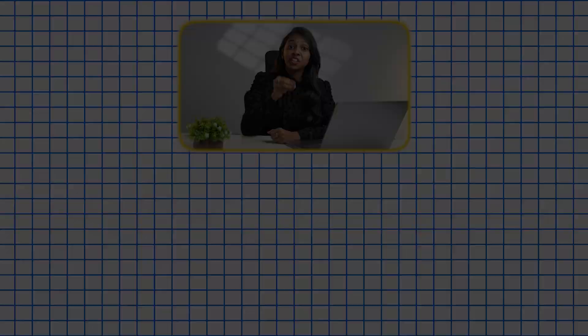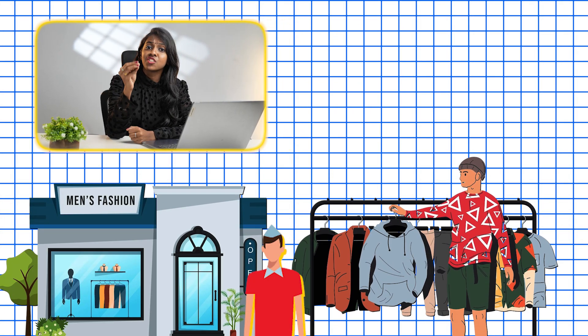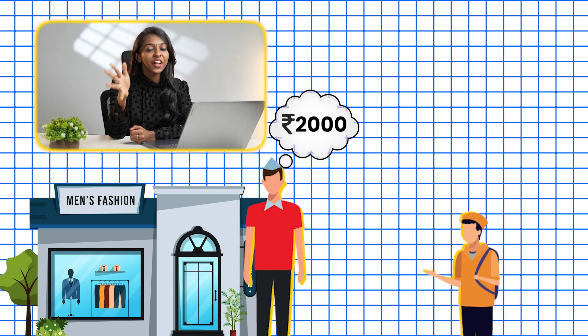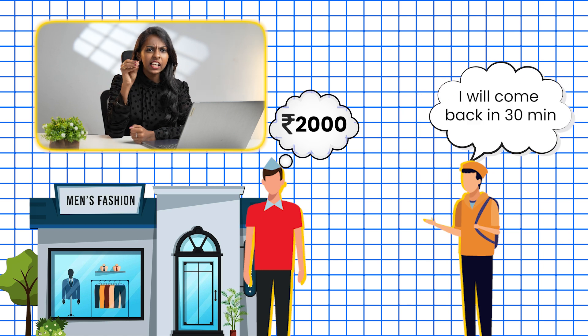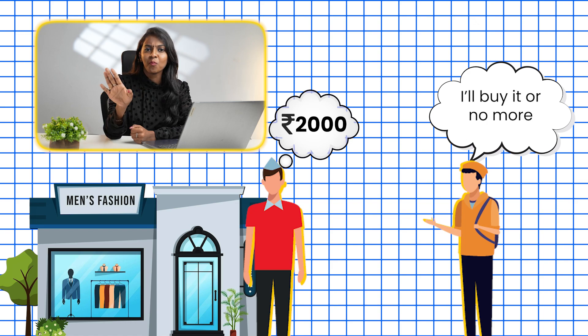Let me tell you by giving you an example. You go to a dress shop and you like a shirt very much. The shopkeeper says that the price of the shirt is around 2000. But you started to negotiate it around 1500, and you also tell that you will come back after 30 minutes — if the price is still around 1500, you will purchase it, or no more. Here comes the actual risk: when you come back after 30 minutes, the price may be higher or you might not even have the shirt at all.